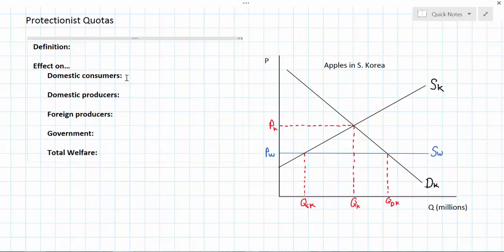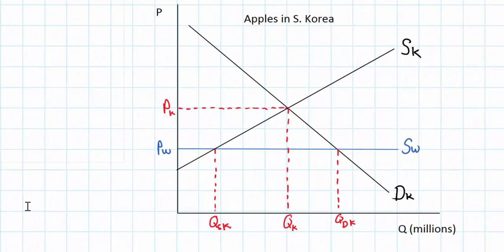Just to remind you, the reason a government might want to impose protectionism is to protect domestic producers of a good from cheaper foreign competition. As you can see in the graph, the world price established by countries with a comparative advantage in apple production is lower than the domestic Korean price. Therefore South Korea will import cheaper apples and consumers will enjoy a greater level of consumer surplus than they would without free trade.